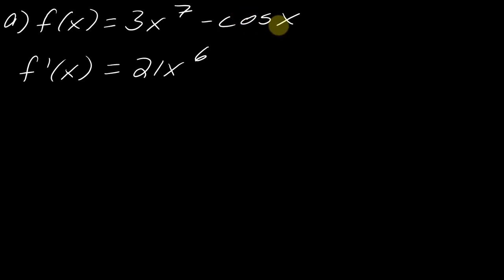Now the derivative of cosine is negative sine. So a negative and a negative is going to actually turn this now into positive sine of x. So make sure that you've got that.